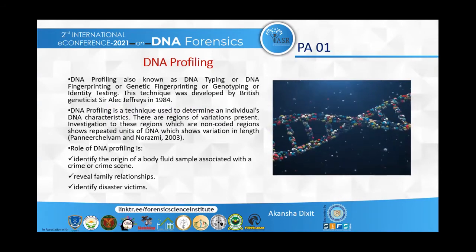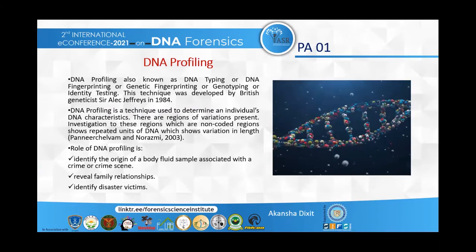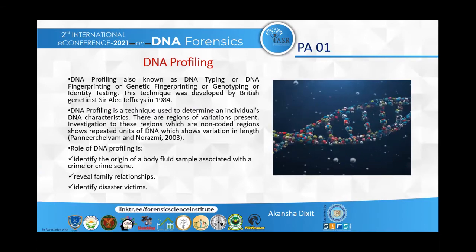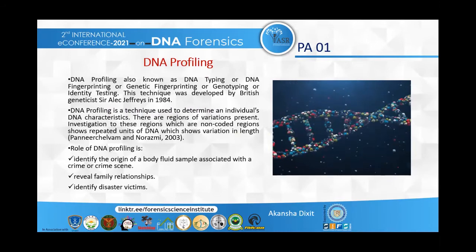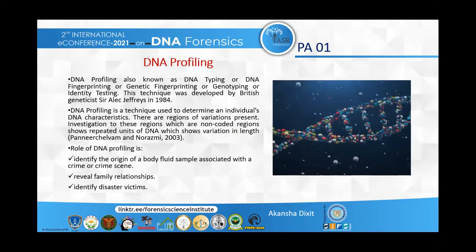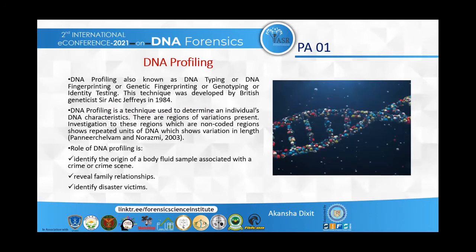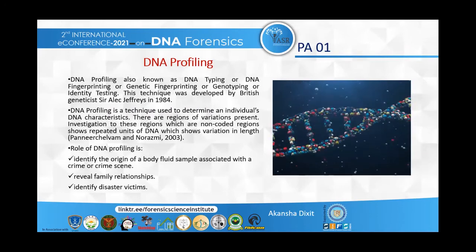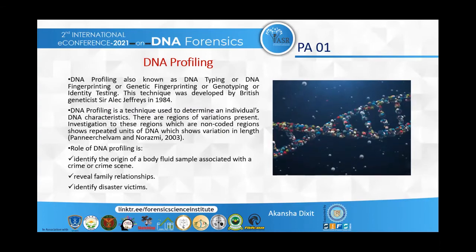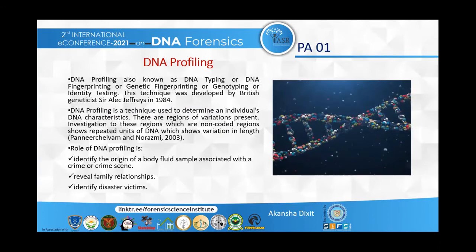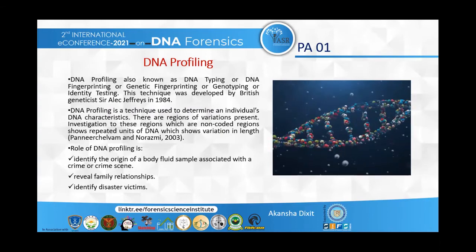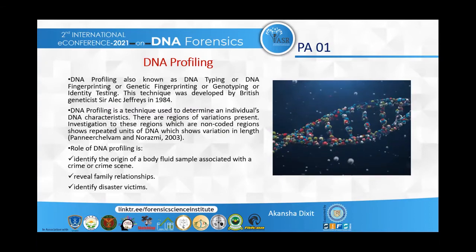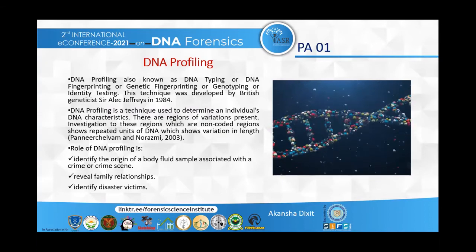DNA profiling, which is also known as DNA typing, DNA fingerprinting, or genetic fingerprinting, was first discovered by Sir Alec Jeffreys in 1984. It is a technique used to determine an individual's DNA characteristics. The main role of DNA profiling is to identify individual identity, reveal family paternity cases, and determine kinship relationships.